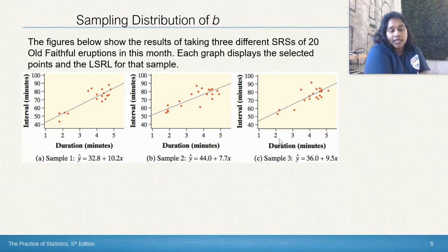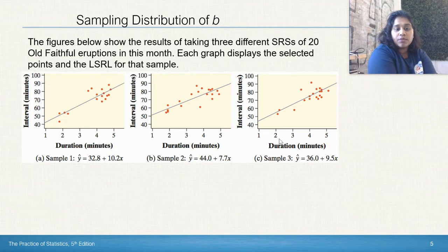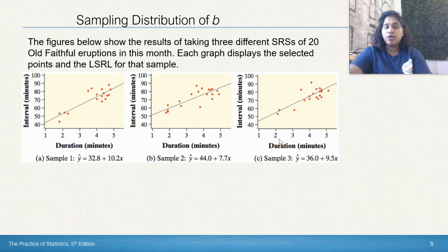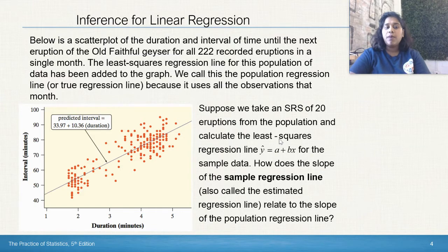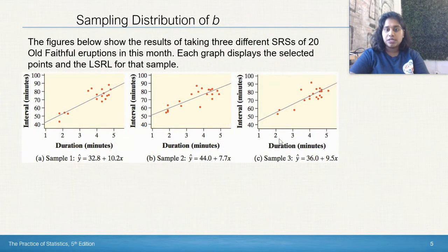Remember, your slope is the value connected to the x. The slope in sample A is 10.2, slope in sample B is 7.7, and the slope in sample C is 9.5. What do you notice about those values, especially in comparison back to the population where the slope was 10.36?